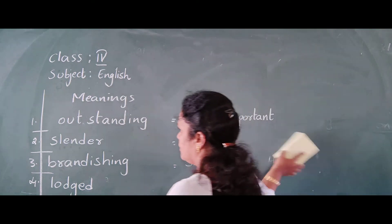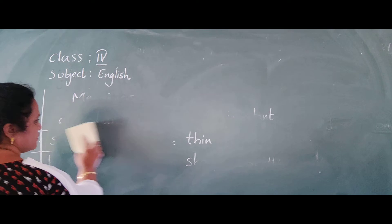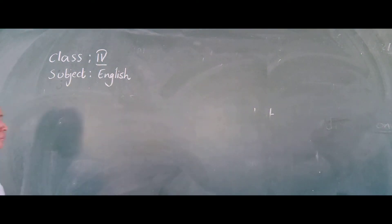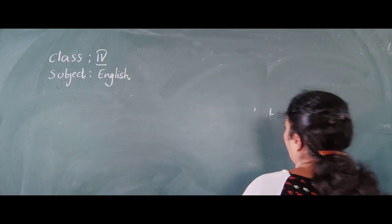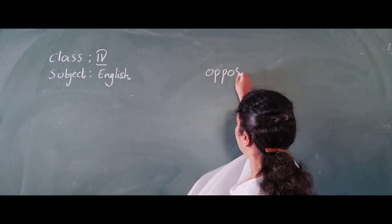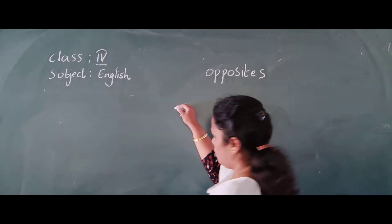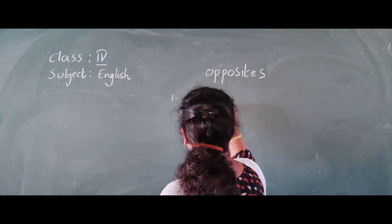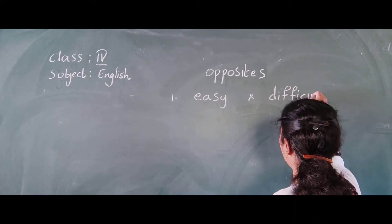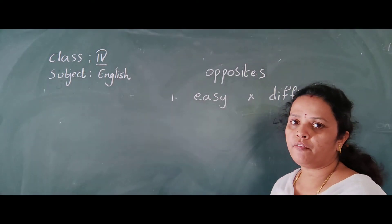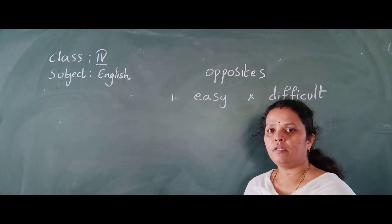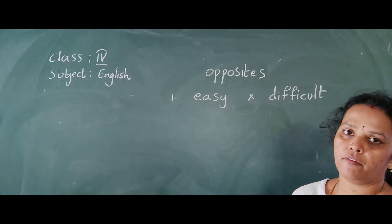Next: Opposites. Fold the paper to the middle and write the heading 'Opposites.' First one: Easy. Easy opposite — Difficult. D-I-F-F-I-C-U-L-T. Easy means simple; difficult means hard.